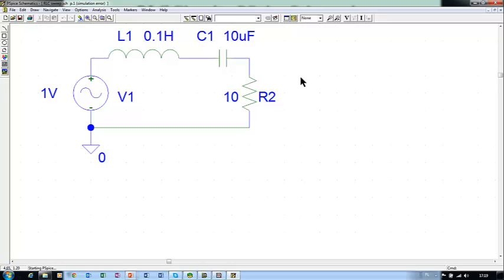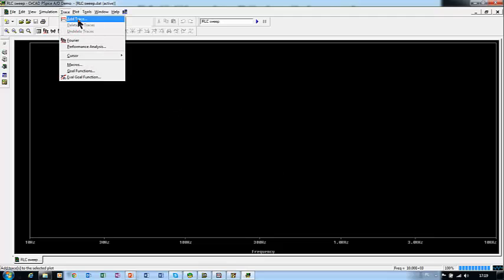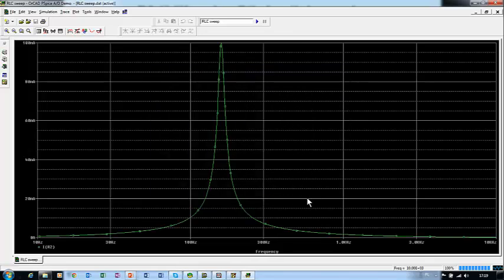One second, two seconds, three seconds, and we have a Probe window, an empty Probe window. We have to add trace. In our case, we are interested in current, the mesh current. And this is the mesh current. This completes AC sweep analysis by means of PSPICE schematics.